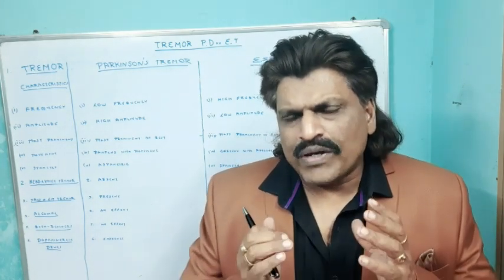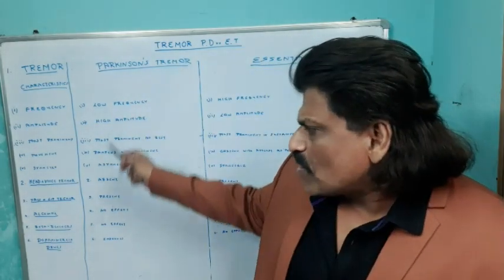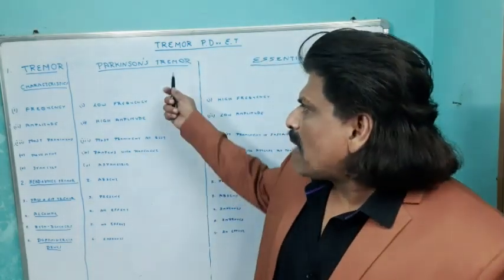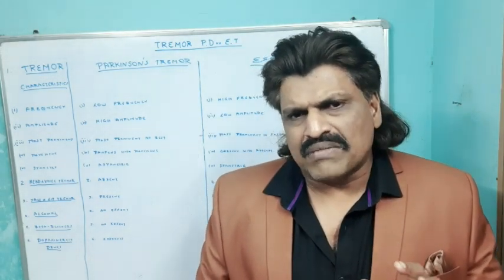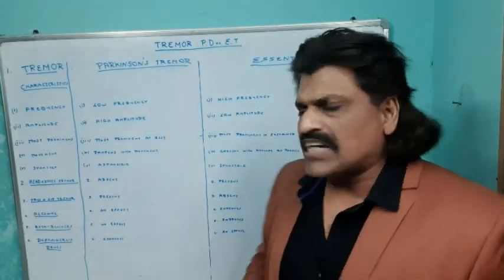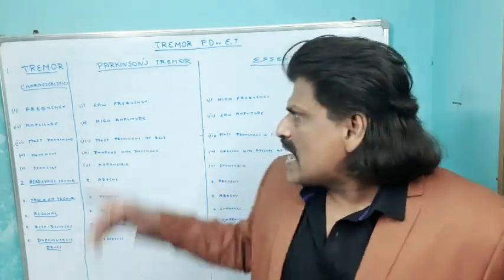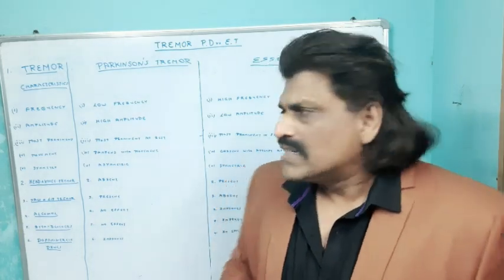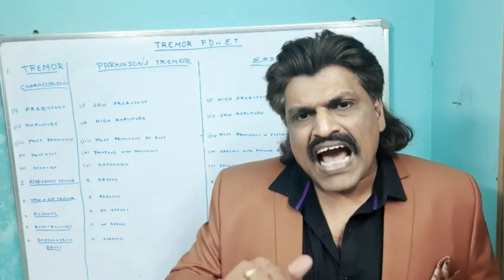Both look similar, so how are we going to differentiate Parkinson's tremor from essential tremor? If we proceed methodically, step by step, we can differentiate them. The frequency of Parkinson's tremor is very low — it is a pathological, low-frequency tremor. Whereas in essential tremor, the frequency is very high. Second, the amplitude in Parkinson's tremor is high. So Parkinson's tremor is high amplitude and low frequency, whereas essential tremor has high frequency and low amplitude.